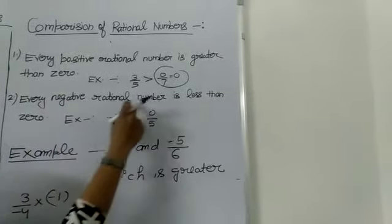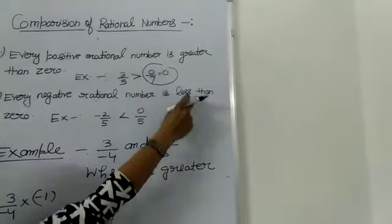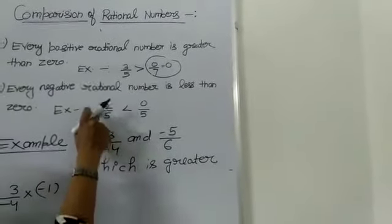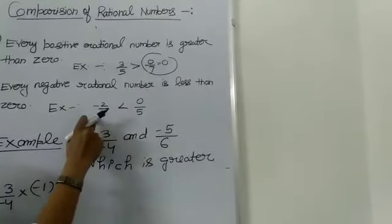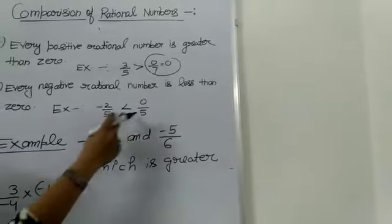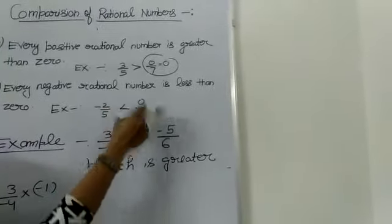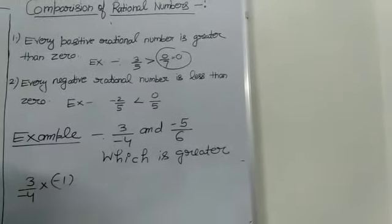Every negative rational number is always less than 0. So minus 2 upon 5 is a negative rational number, and it will be less than 0 upon 5.